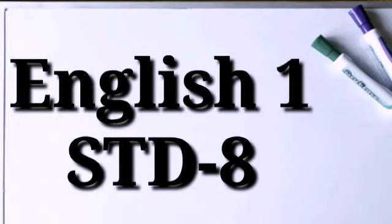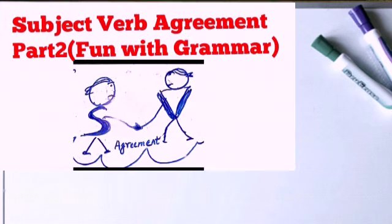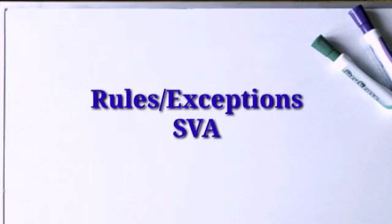Good morning students. This is my second video related to subject-verb agreement. In the previous video I taught you what subject-verb agreement is, how it works in the English language, and how to determine whether the subject of a sentence is singular or plural. In this video we will have a look at some more rules and exceptions. If you learn all these rules nicely, you will be able to do the further exercises A, B, C, and D.